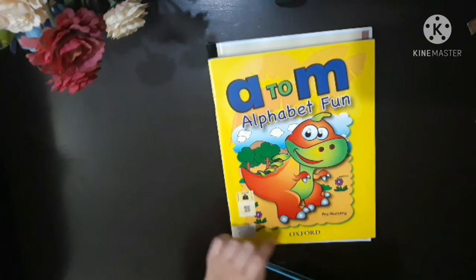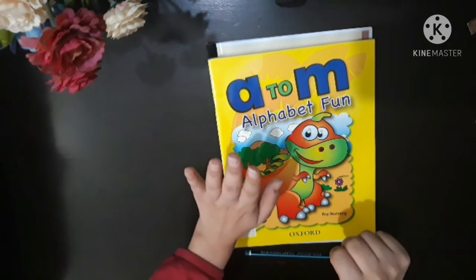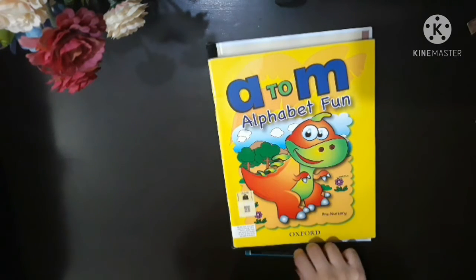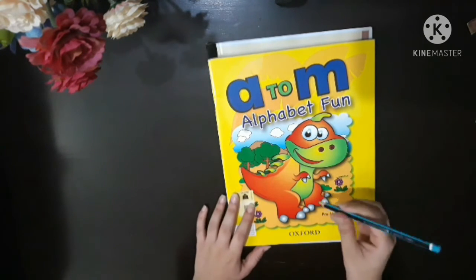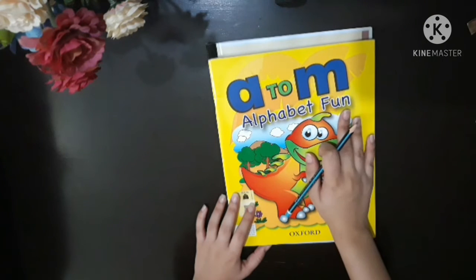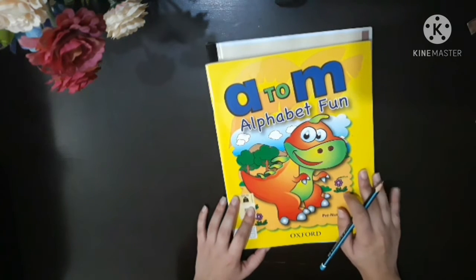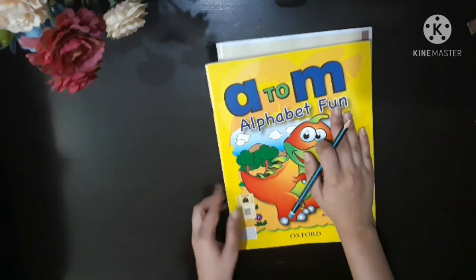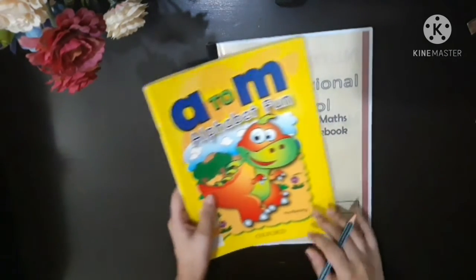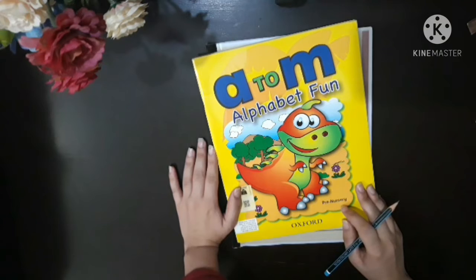So this is session number four of our week seven. Today is Thursday, May 27, 2021, and we've got work on alphabet form and our maths book. Let's see.